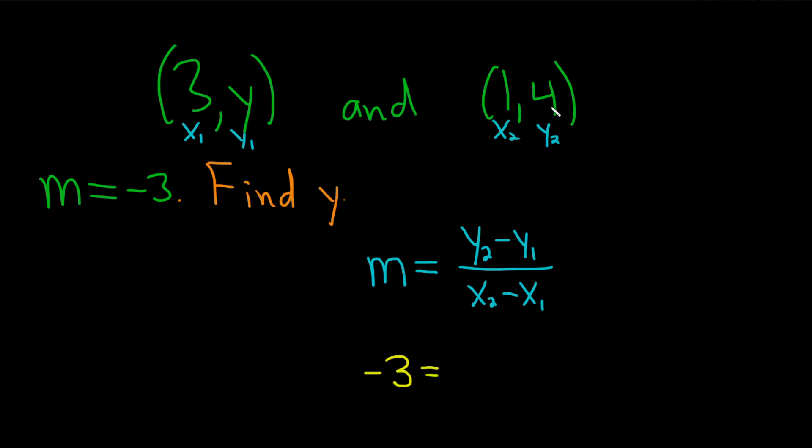Then it's y2 minus y1, so 4 minus y. That goes up top. Over, and on the bottom it's x2 minus x1, so 1 minus 3.